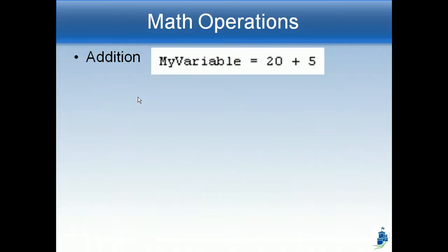So addition, we use a plus sign, and we say my variable is equal to 20 plus 5, and that means that my variable will be equal to 25.